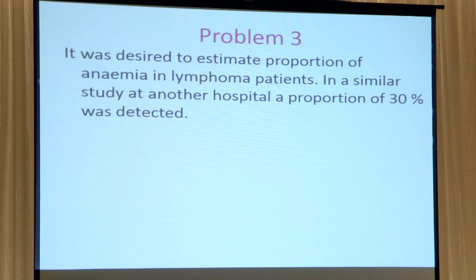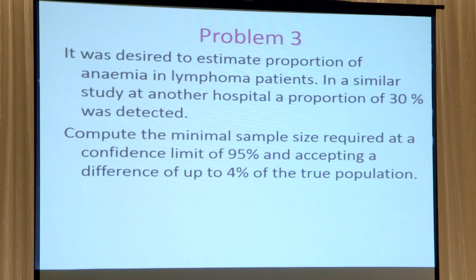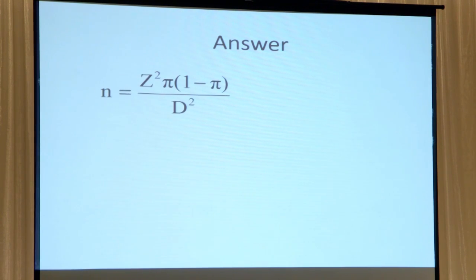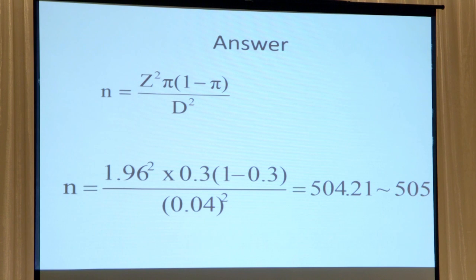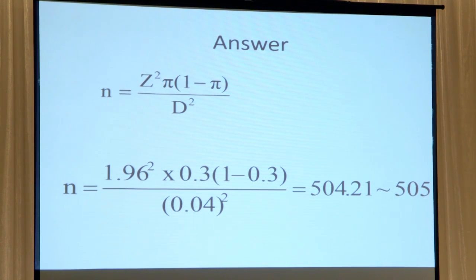The third example is for qualitative data — ratios rather than measurements. You're looking at the proportion of anemia in lymphoma patients, typically about 30% or 0.3. To compute the sample size at 95% confidence looking for a 4% difference, the Z is 1.96. From the proportion and the required difference, you get the total number needed. If you bump it up to 99% confidence, you switch 1.96 for 2.56, and that increases the sample size by at least three times.